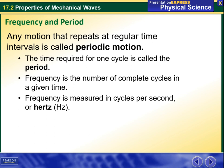Any motion that repeats at regular time intervals is called periodic motion. The time required for one cycle is called the period. Frequency is the number of complete cycles in a given time. Frequency is measured in cycles per second, or hertz.